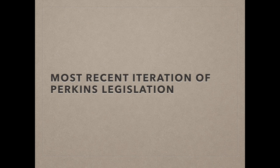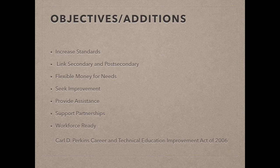The most recent iteration of the Perkins legislation is the Perkins IV. The most recent Perkins Act, known as the Carl D. Perkins Career and Technical Education Improvement Act of 2006, or Perkins IV, was created for the purpose of developing more fully the academic and career and technical skills of secondary education students and post-secondary education students who elect to enroll in career and technical education. That is quoted directly from the act.